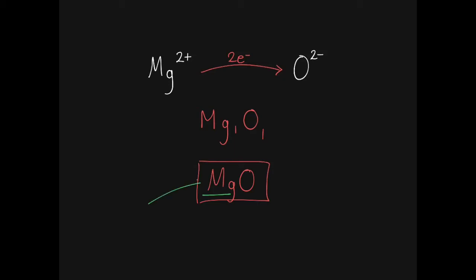When we write the formula, we always put the element that forms the cation first and the element that forms the anion second.